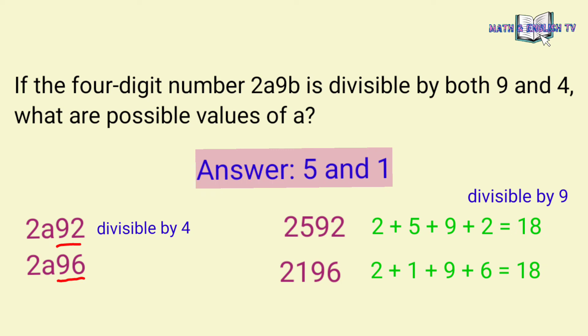So, if the value of B is 2, then the value of A is 5 to make it divisible by both 9 and 4.